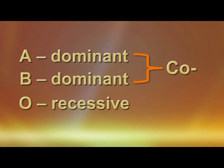In other words, if you inherit an A and a B gene, both will be expressed as AB. If you inherit an A and an O gene, only the A will be expressed as it is dominant over the O.